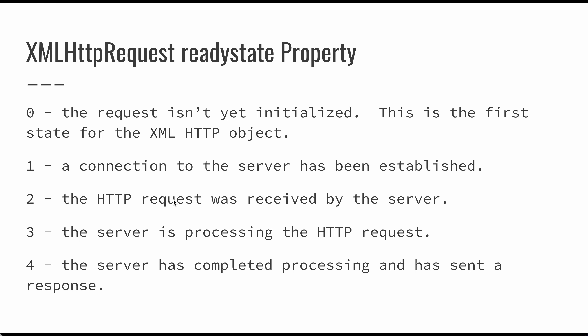The ready state property has five values: 0 means the request isn't initialized, 1 means connected to the server, 2 means the request has been received by the server, 3 means the server is processing the request, and 4 means processing is complete and a response has been given. We really care about ready state 4 — states 0 through 3 exist but you'd only use them for logging status or debug information.